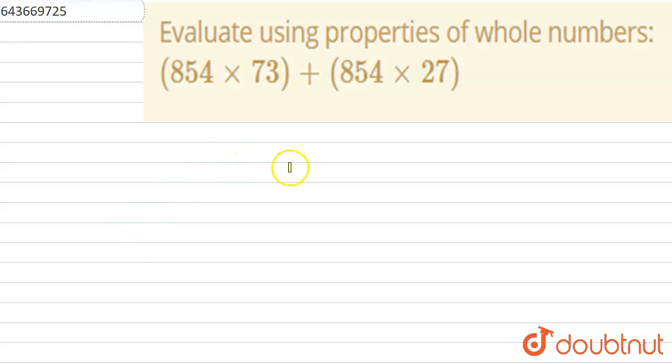Evaluate using properties of whole numbers: 854 into 73 plus 854 into 27.